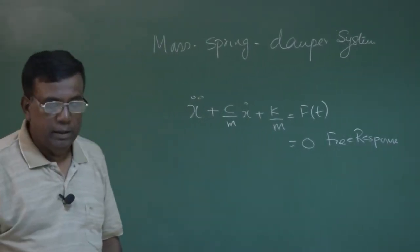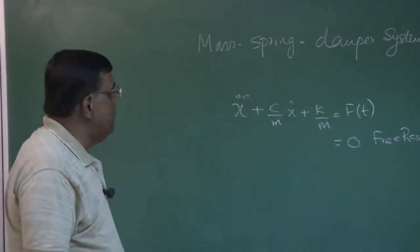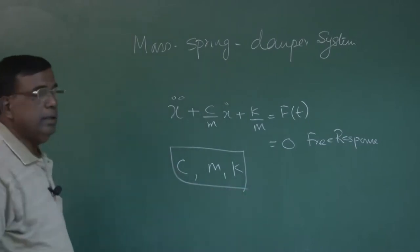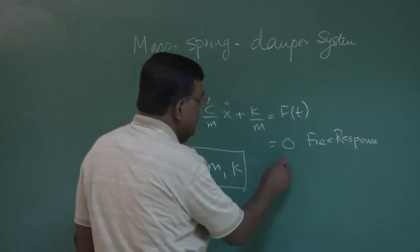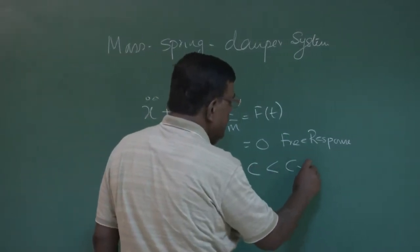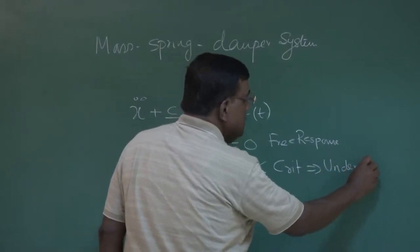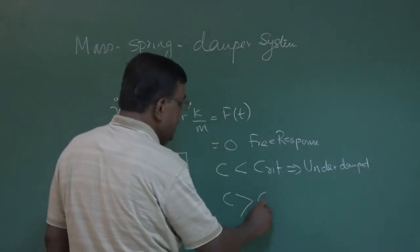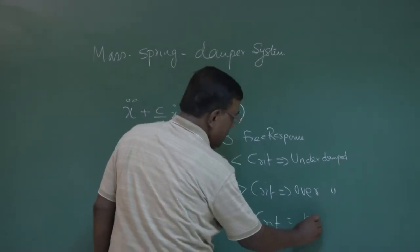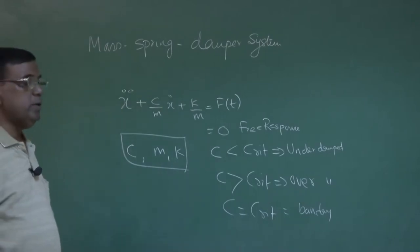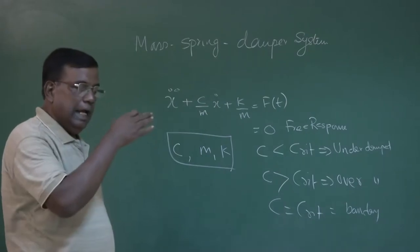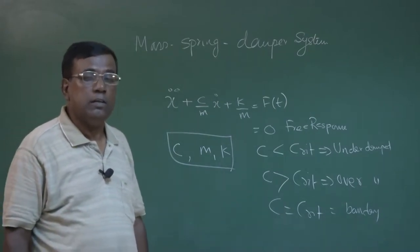We also understood that when we try to find its characteristic equation, we realize that depending upon the values of c, m, and k in combination, if the damping coefficient c is less than c-critical, this will be the underdamped case. If c is greater than c-critical, it is overdamped. If c equals c-critical, it is the boundary between overdamped and underdamped, and the time to return to equilibrium will be non-oscillatory and fastest.